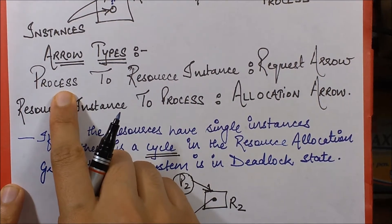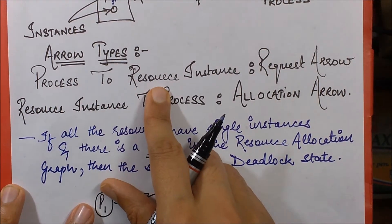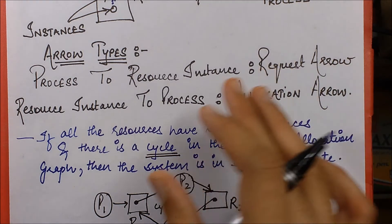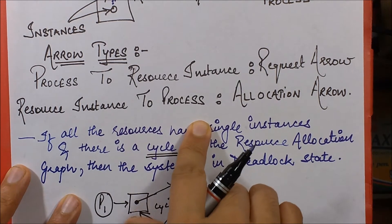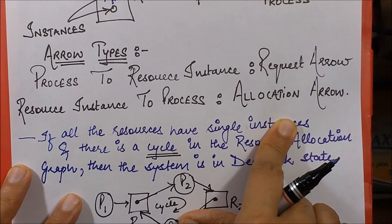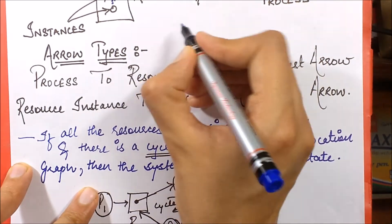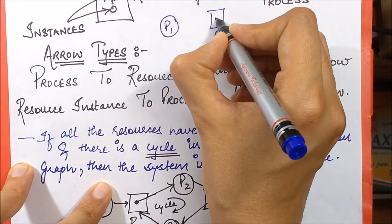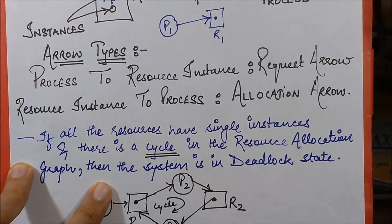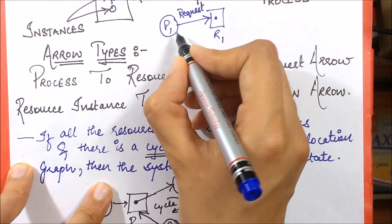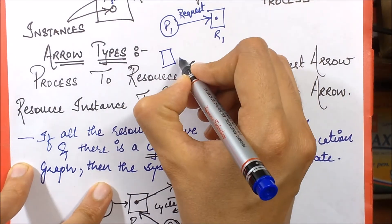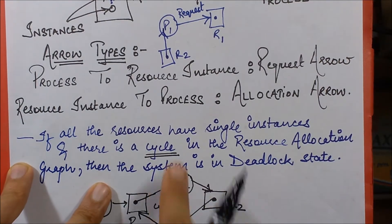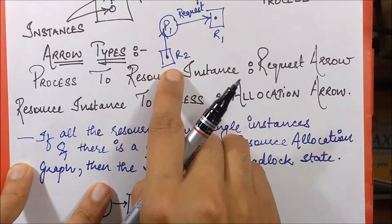The request arrow is when a process is requesting for a resource — it goes from process to resource. The allocation arrow is from resource instance to process. For example, if process P1 is requesting resource R1, that is a request arrow from process to resource. If resource R2 has been assigned to a process, the allocation arrow goes from resource to process.